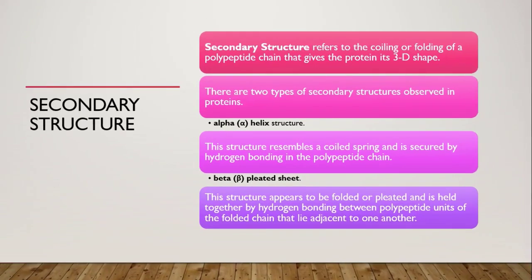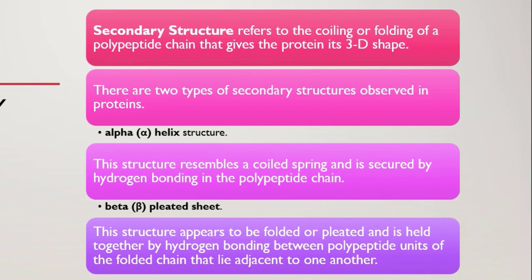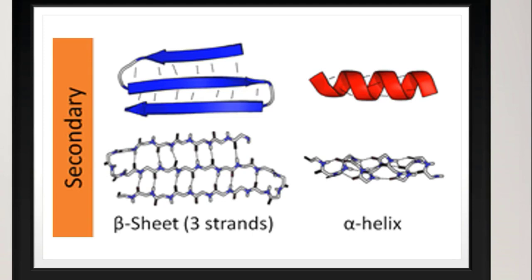Secondary structure of proteins. The polypeptide chains in a protein molecule usually do not lie flat. They coil and fold, giving a three-dimensional shape, which is the secondary structure of proteins. This structure can be of two types: alpha helix or beta-pleated sheets.